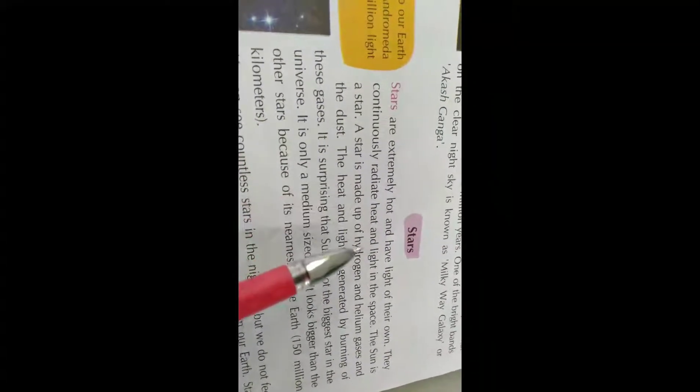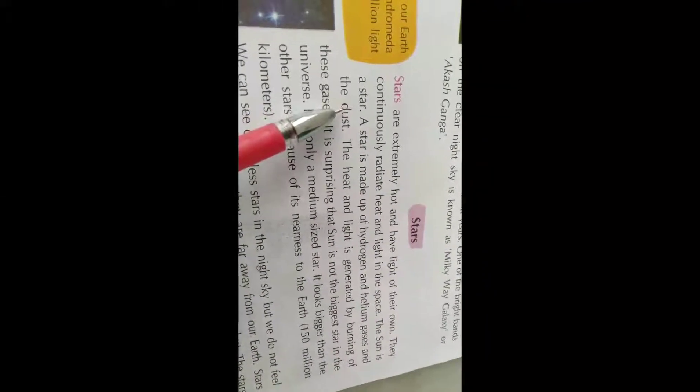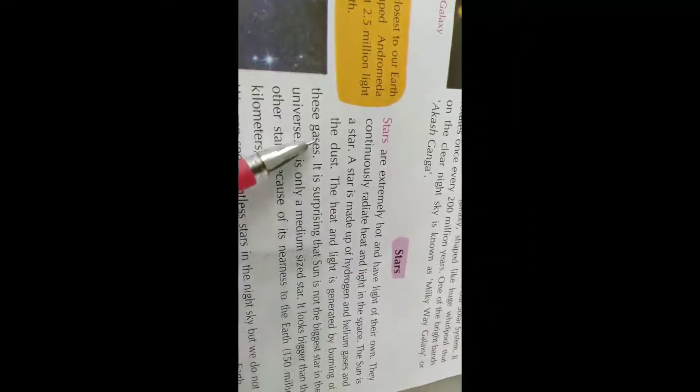A star is made up of hydrogen and helium gases and dust. The heat and light is generated by the burning of these gases.